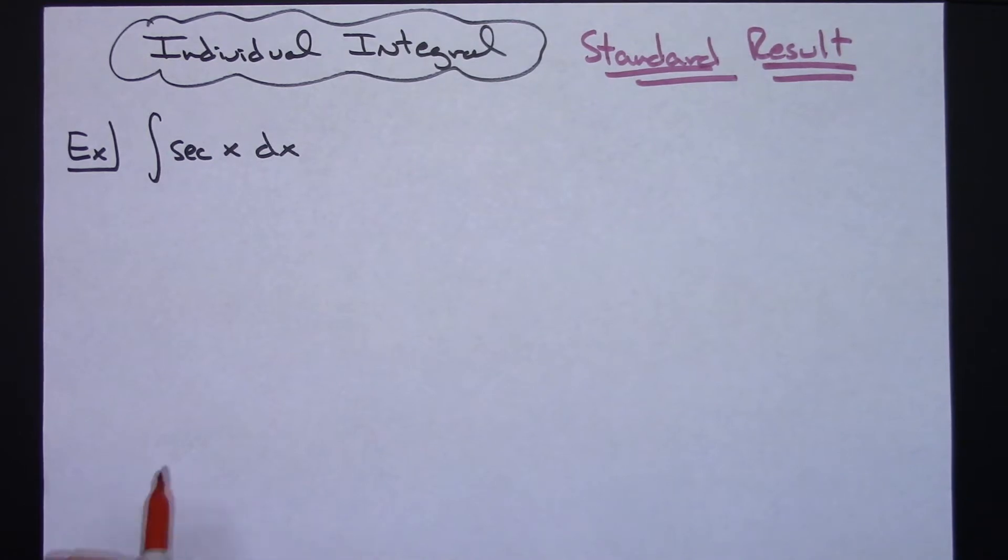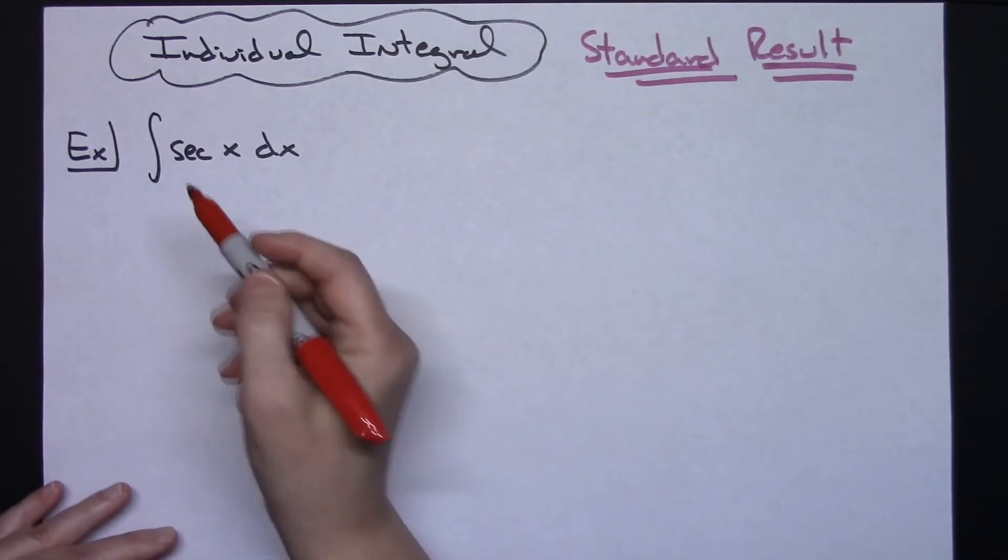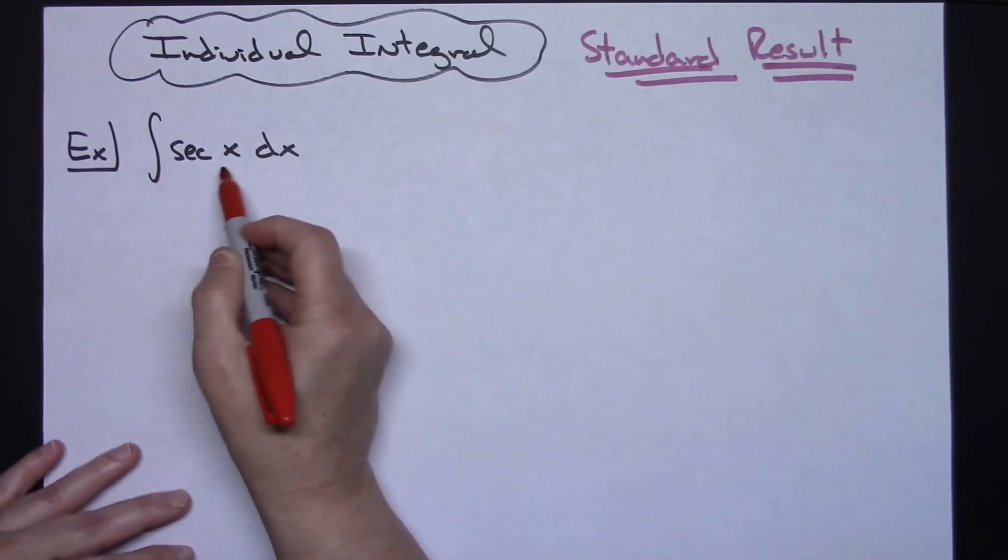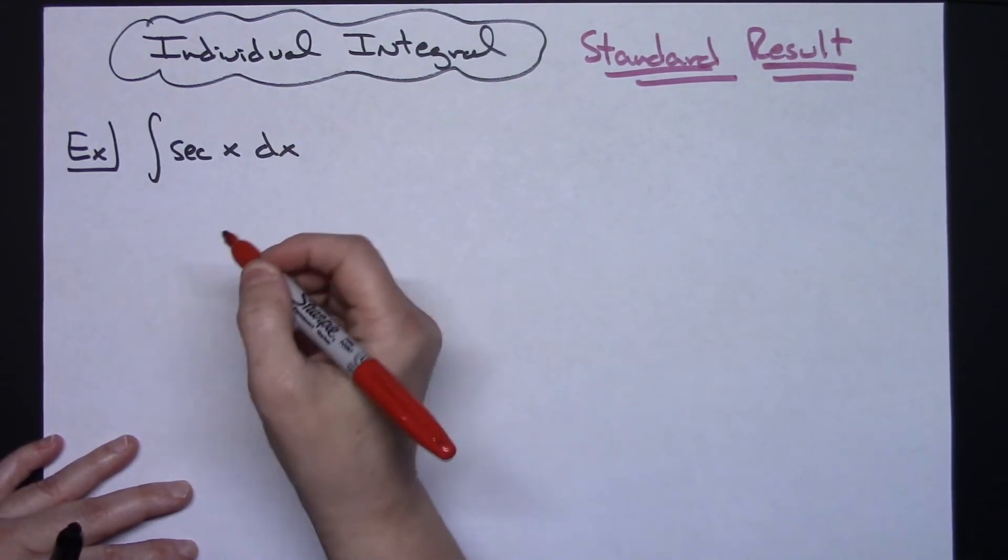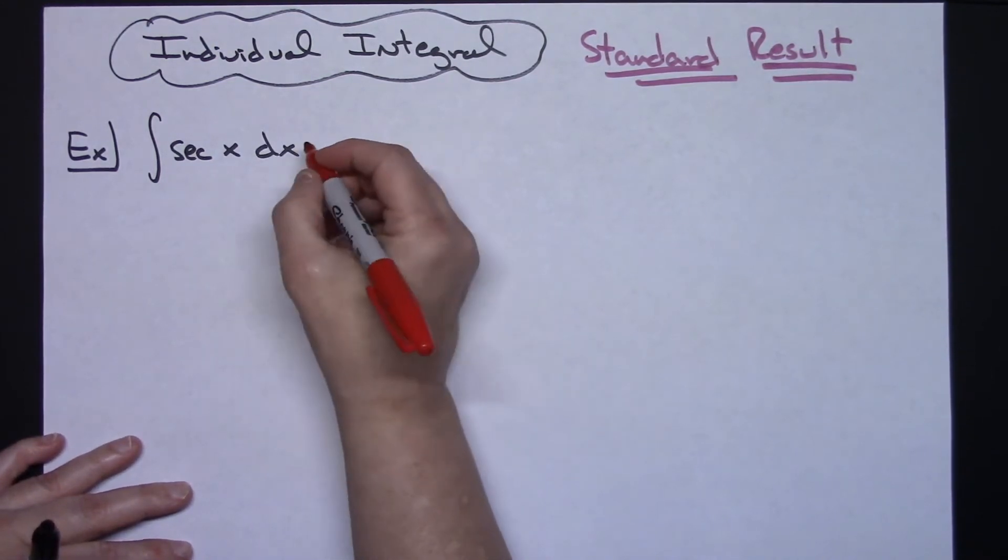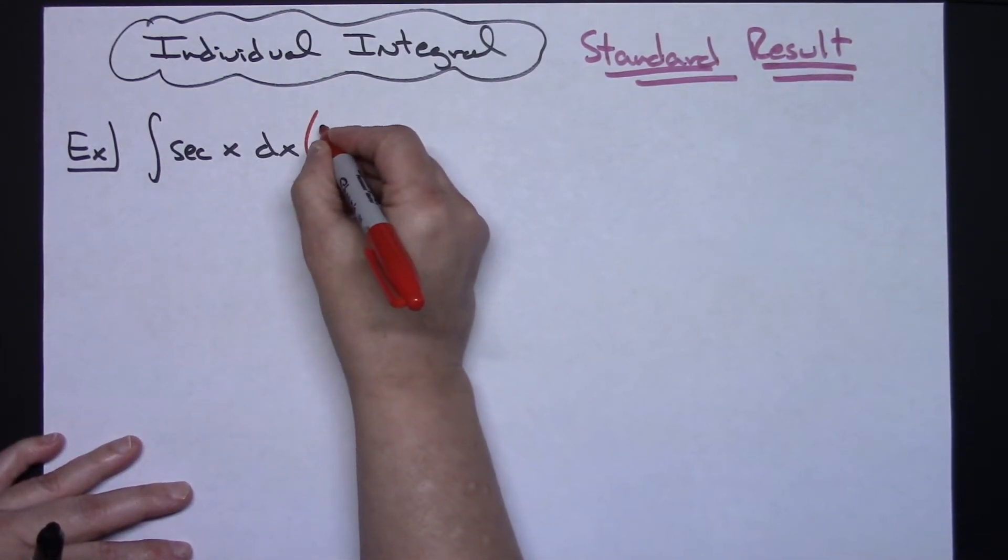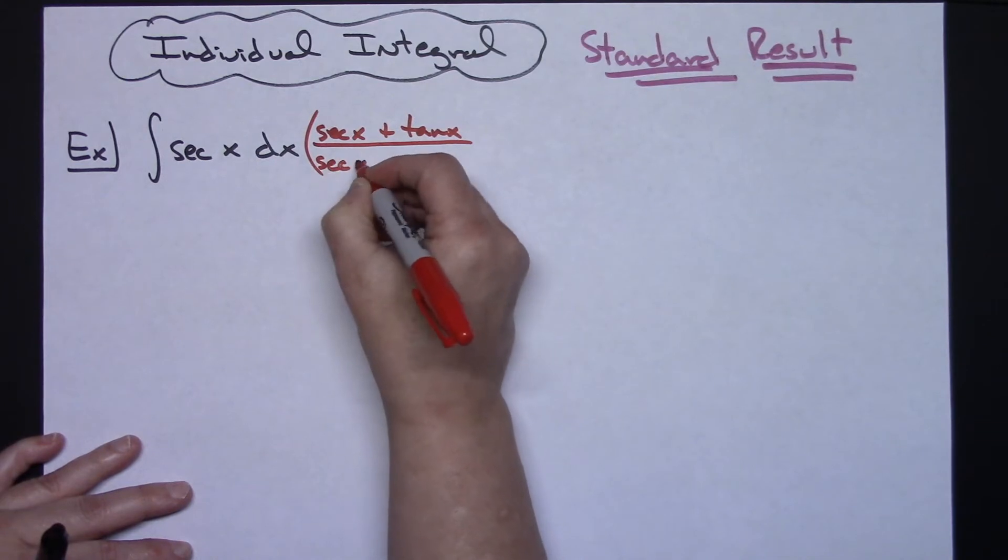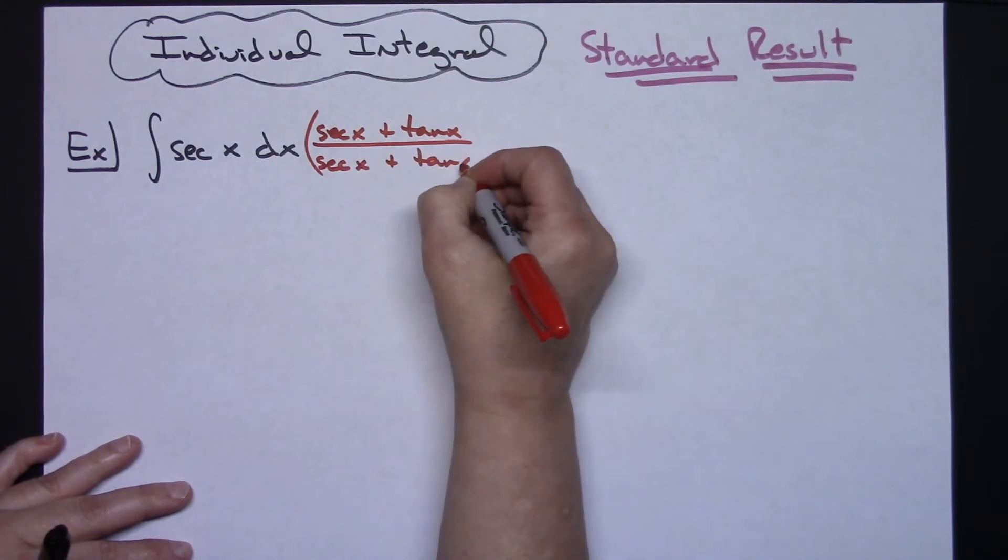So that trick that is going to help you get to an easy u substitution is to choose this secant x and choose to multiply by a form of 1 so that you are not changing the value of my original integral, but I'm going to choose to multiply by secant x plus tangent x all over secant x plus tangent x.